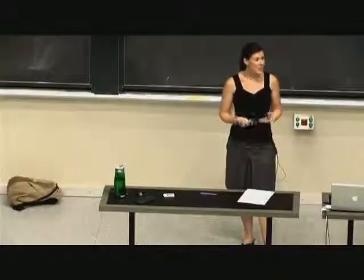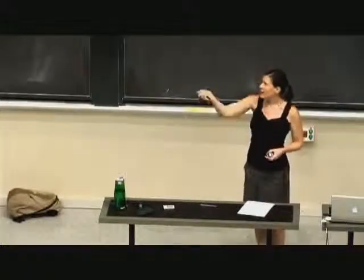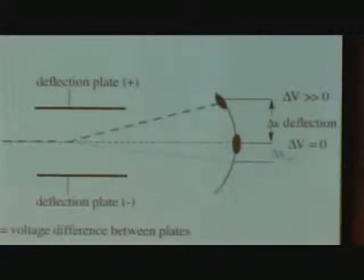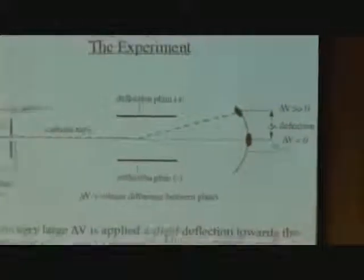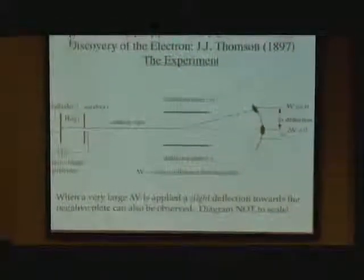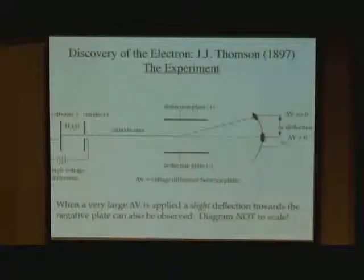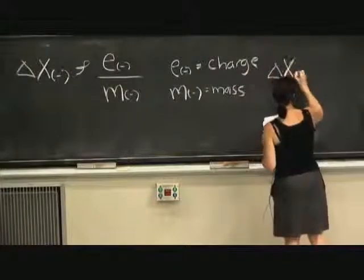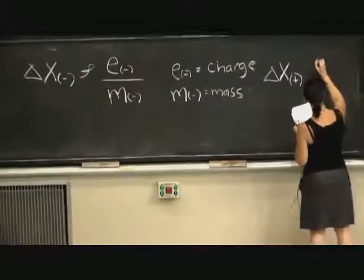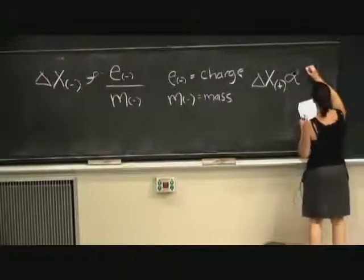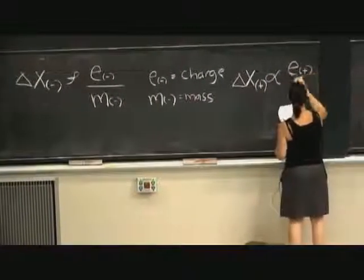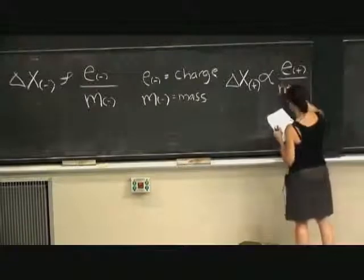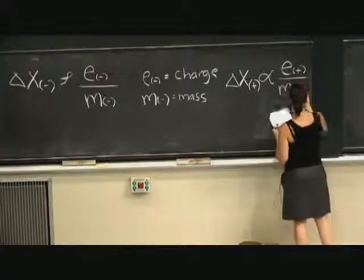But what he could tell from the fact that there was a second particle at all and the fact that it was in this direction is that, in addition to his negative particle, he also, of course, had a positive particle that was within this stream of rays that were coming out. So, of course, he can use the same relationship for the positive particle. So, delta x now of the positive is proportional to the charge on the positive particle all over the mass of the positive particle.